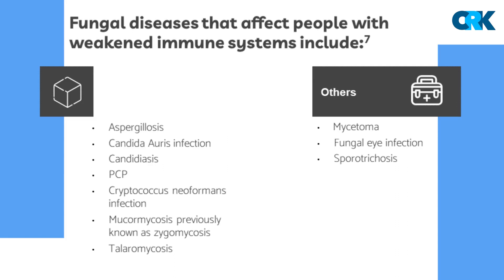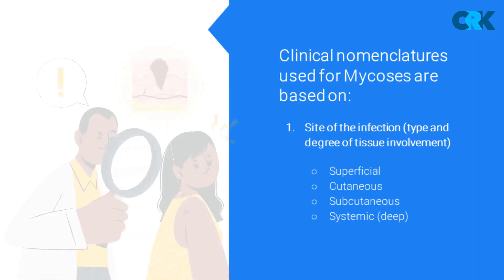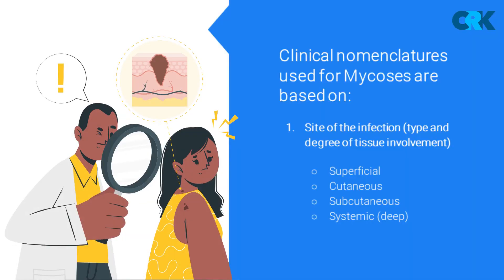Other opportunistic fungi include Cryptococcus neoformans and Pneumocystis pneumonia. Based on site of infection, fungal infections are classified as superficial infections and systemic infections. Cutaneous or superficial infections include infection with dermatophytes, which are the most common fungi affecting nails and hair.